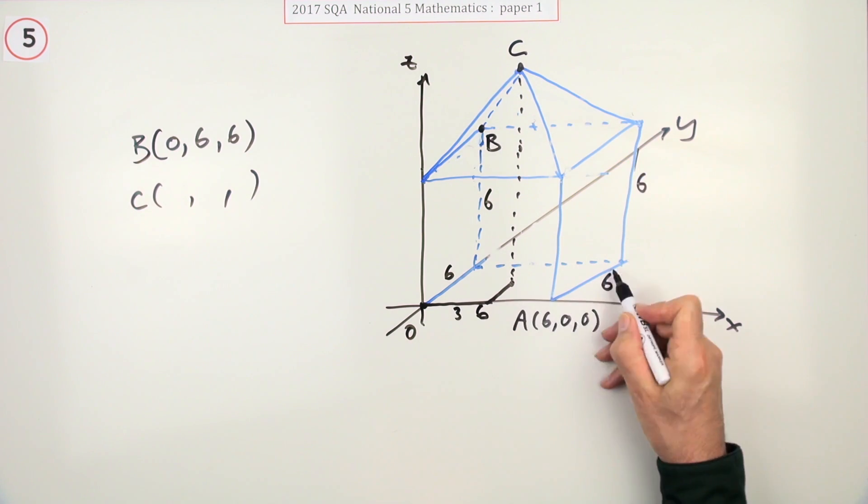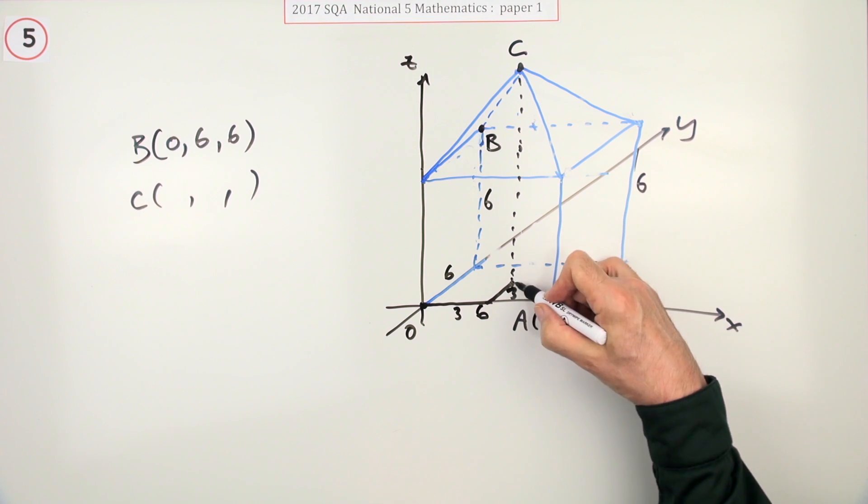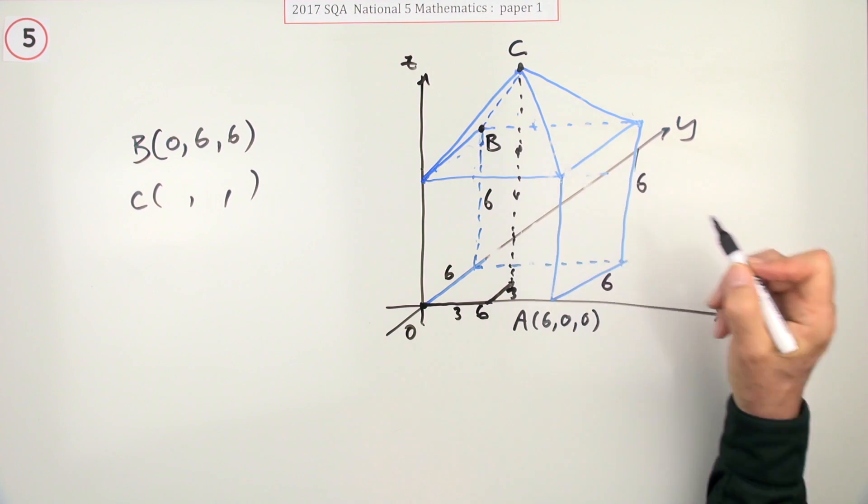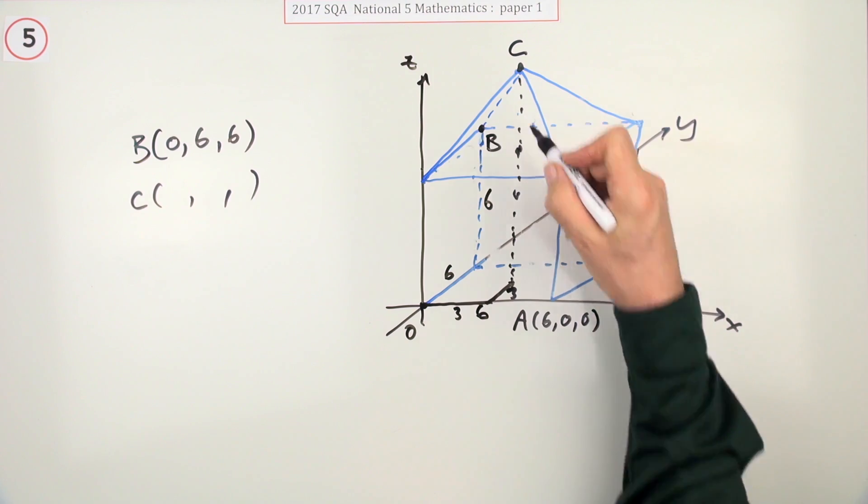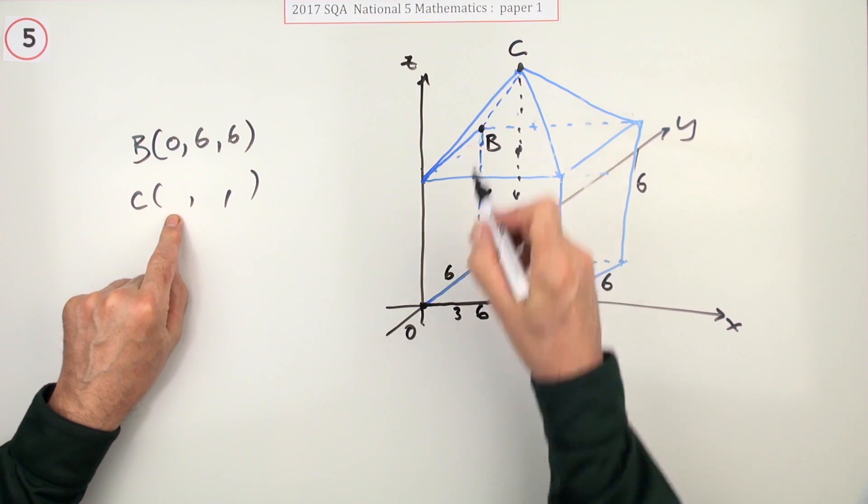Well halfway along would be 3, halfway back would be 3, but all the way to the top would be the height of the cube which is 6 plus another 3.